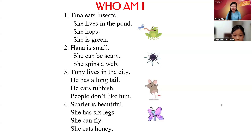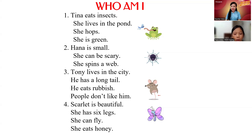Okay. Tina is an insect. She lives in the pond. She hops and she is green. Hannah is small. She can be scary. She spins a web. Tina is... she can fly. She's horny.